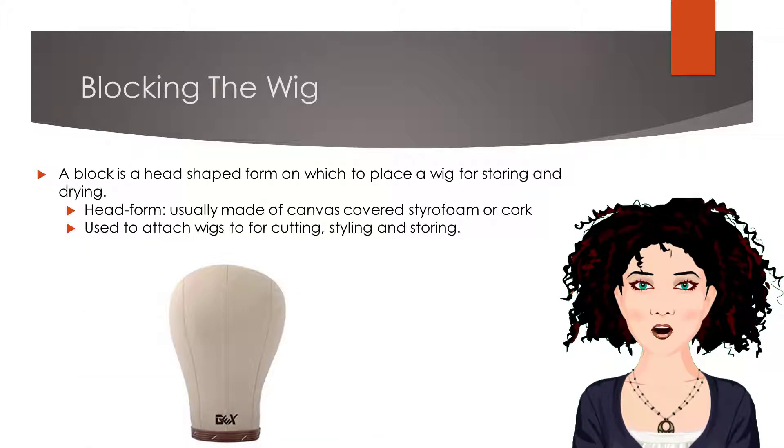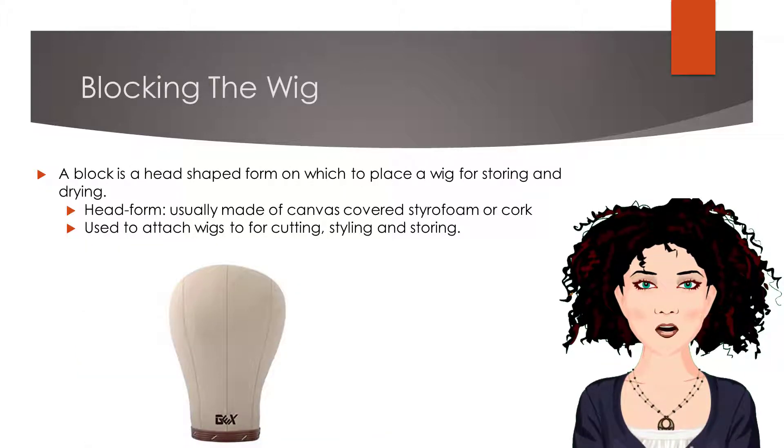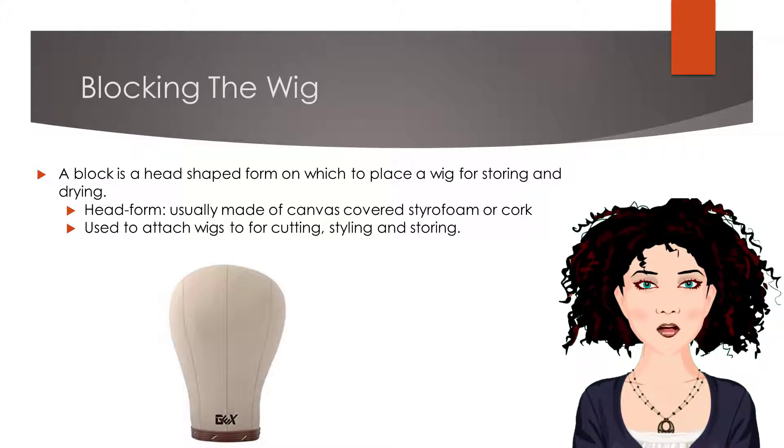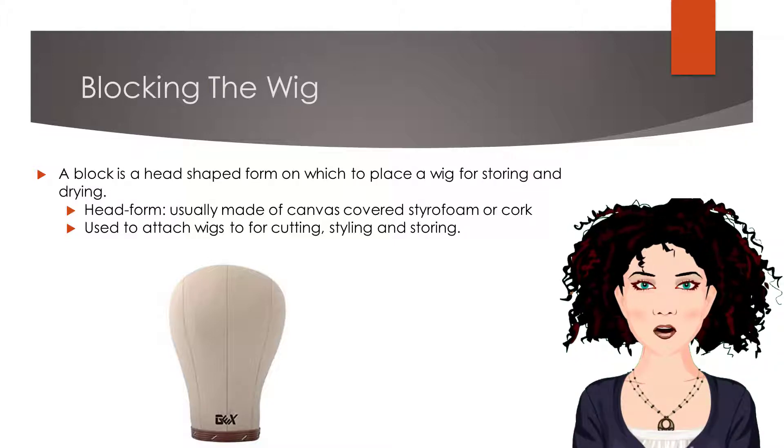A wig block is a head-shaped form on which to place a wig for cutting, styling, storing, and drying. A head form is usually made of styrofoam or cork and covered with canvas.